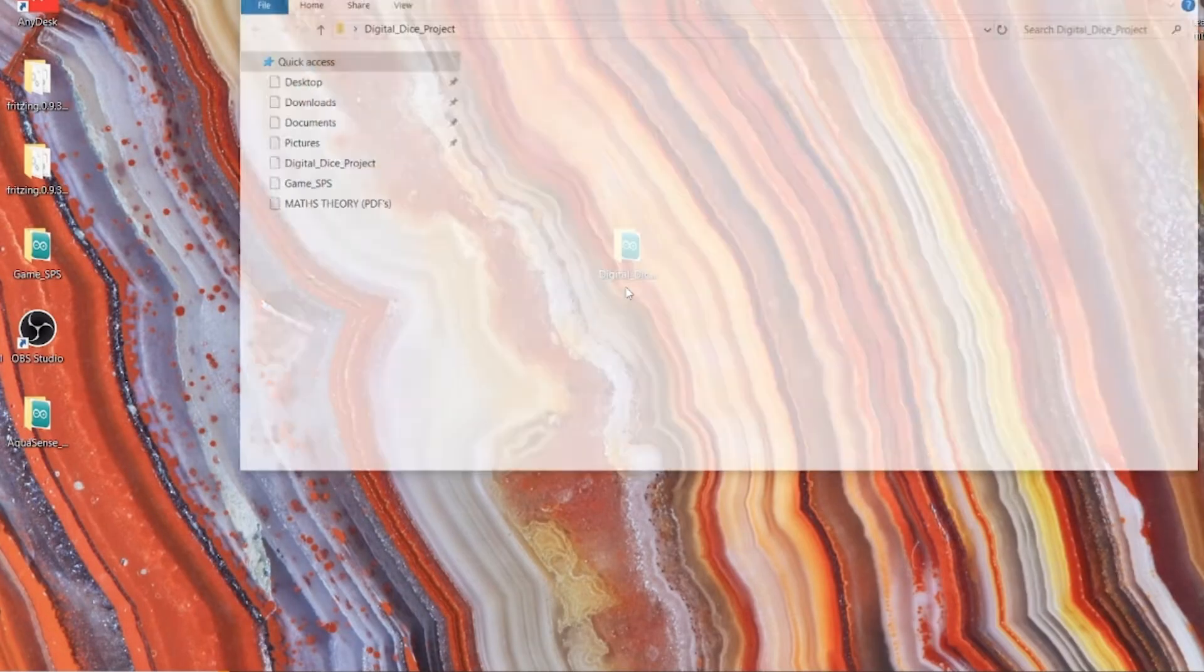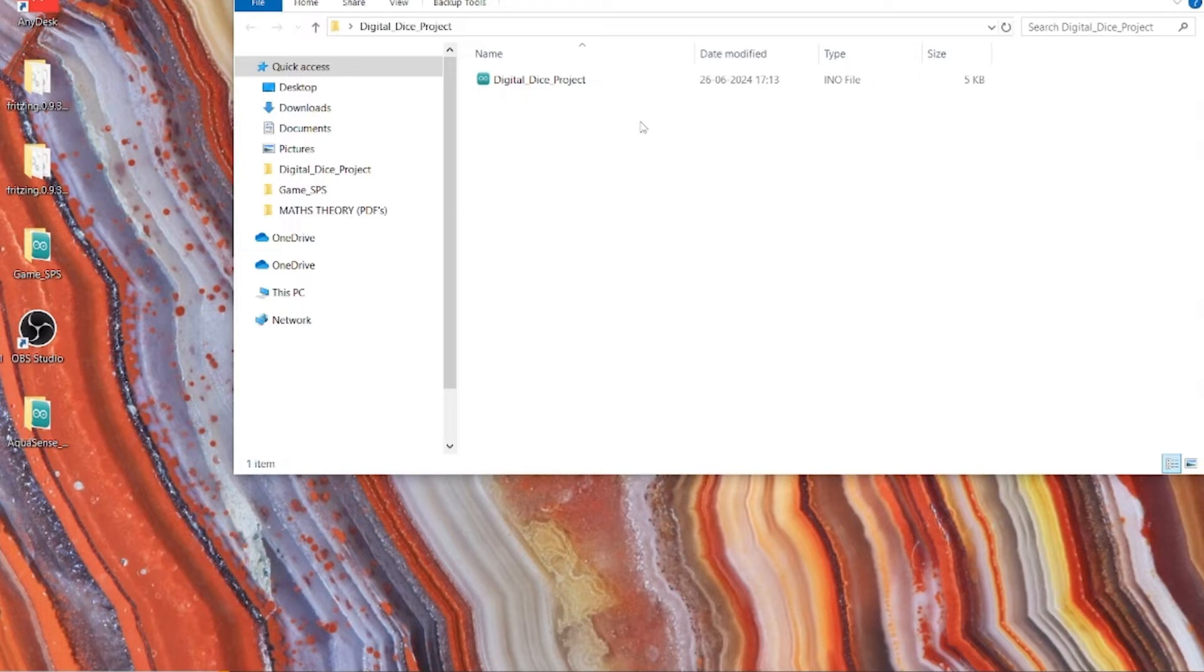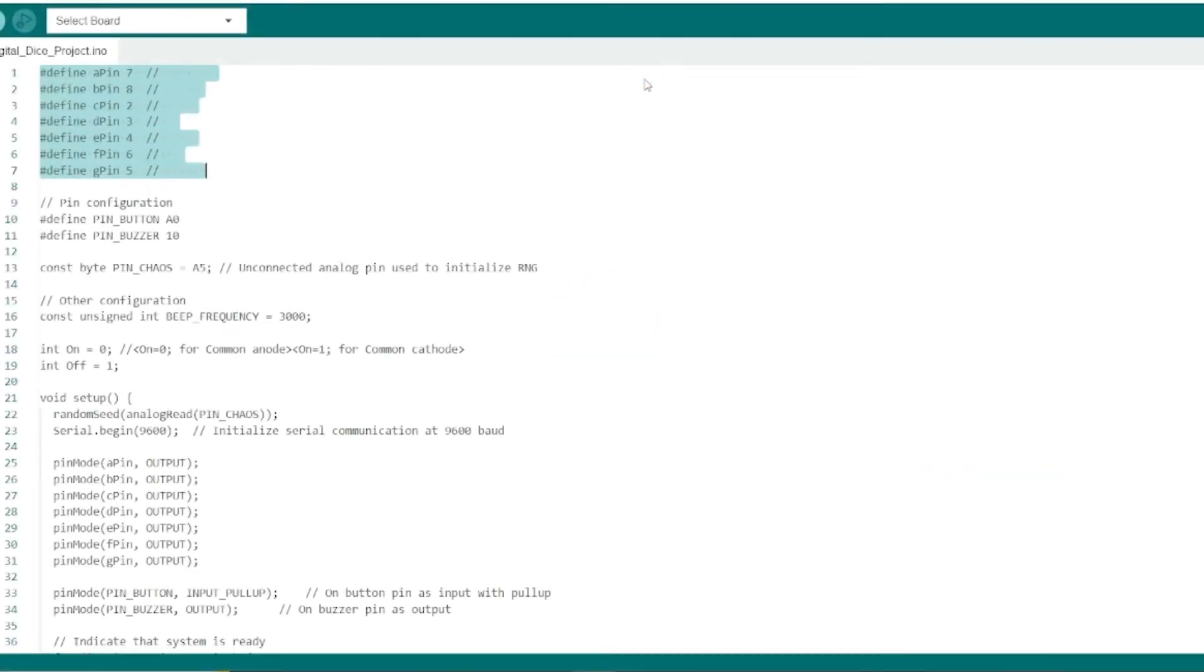It's time to write some code. Download the code by using the link provided in the description below. Now open the file if you've already downloaded the Arduino IDE, otherwise download the Arduino IDE first.